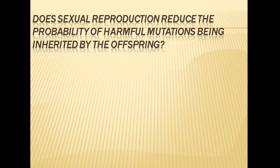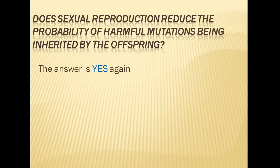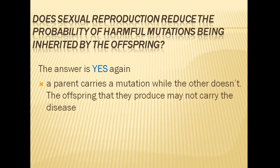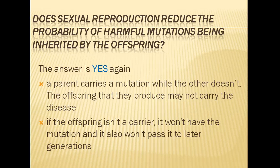Does sexual reproduction reduce the probability of harmful mutations being inherited by the offspring? Yes. If a parent carries a mutation while the other doesn't, the offspring they produce may not carry the disease. If the offspring isn't a carrier, it won't have the mutation and it also won't pass it to later generations, which is a good thing.